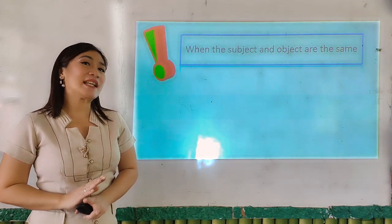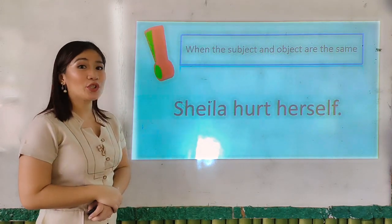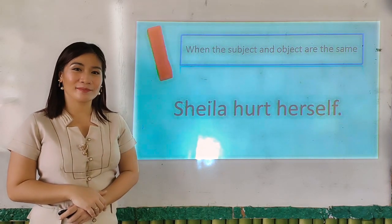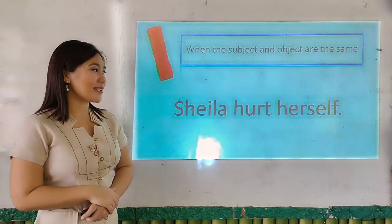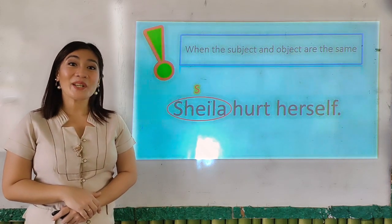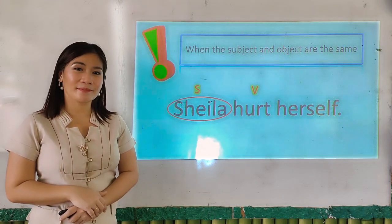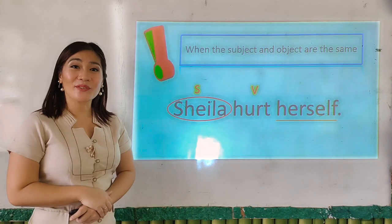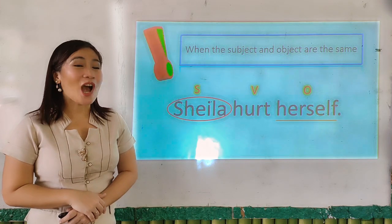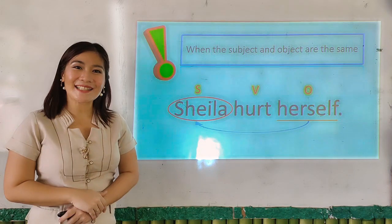I am going to flash different sentences, and you have to repeat after me. Sheila — she is our subject. What about the verb used? Very good — hurt. And what about the object of the sentence? Yes — herself. And the word herself refers back to our subject, which is Sheila.